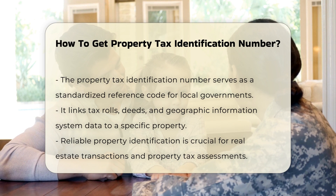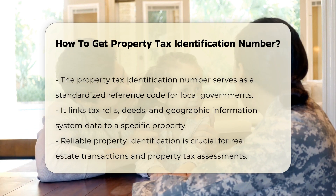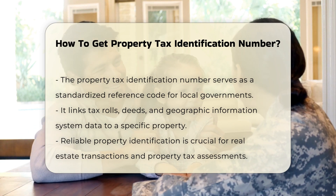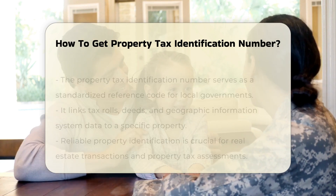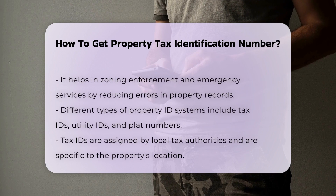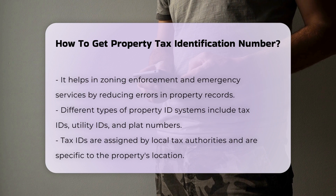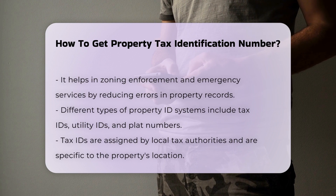Types of Property ID Systems: There are several types of property ID systems, including tax IDs or parcel numbers, utility IDs, and plat or parcel numbers. Tax IDs are assigned by local tax or assessment authorities for property tax purposes and are location-specific.